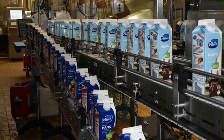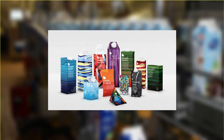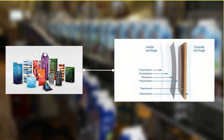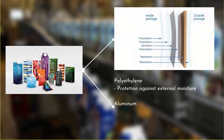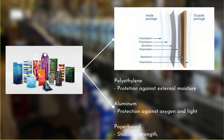Next up, let's take a look at the packing station. It's a Tetra Pak packaging — I'm sure you have seen this kind of packaging for milk relatively often in stores. This kind of packaging consists of layers of polyethylene, aluminum foil, and paperboard sandwiched together. Polyethylene is used to protect against external moisture, and aluminum is used for protection from oxygen and light, while the paperboard provides stability, strength, and smoothness.